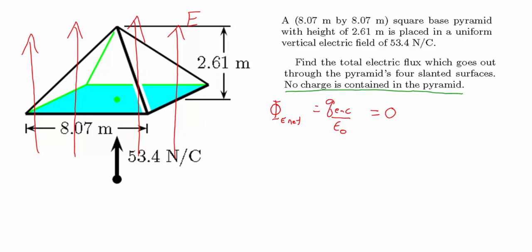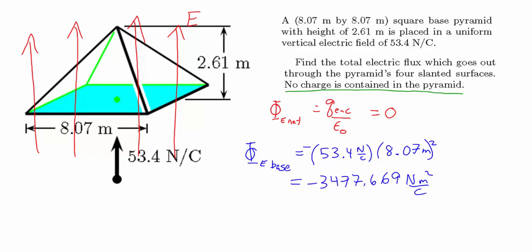At first it looks like this problem is more complicated because we have the height of the pyramid and might need to find an angle, but we don't need to do any of this. We recognize that the flux coming in through the base has to equal the flux coming out through the four slanted sides. The electric field is perpendicular to the base, so the electric flux through the base is 53.4 newtons per coulomb times 8.07 meters squared. Because the electric field is coming into the pyramid through the base, that flux is negative: negative 3477.669 newton meters squared per coulomb.